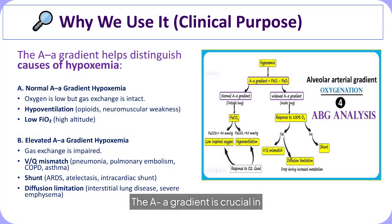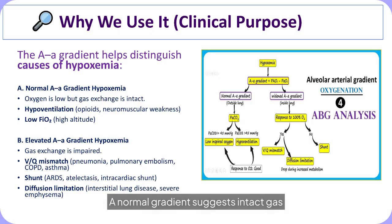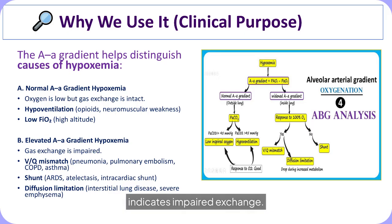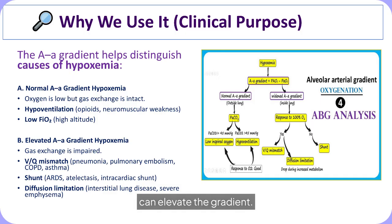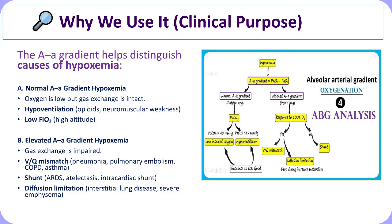The alveolar-arterial oxygen gradient is used clinically to differentiate causes of hypoxemia by assessing the efficiency of oxygen transfer from alveoli into the pulmonary circulation. A normal gradient indicates that the lung's ability to move oxygen across the alveolar-capillary membrane is preserved, and low oxygen levels are usually due to hypoventilation or low-inspired oxygen tension, such as in drug-induced respiratory depression, neuromuscular weakness, or high-altitude exposure.